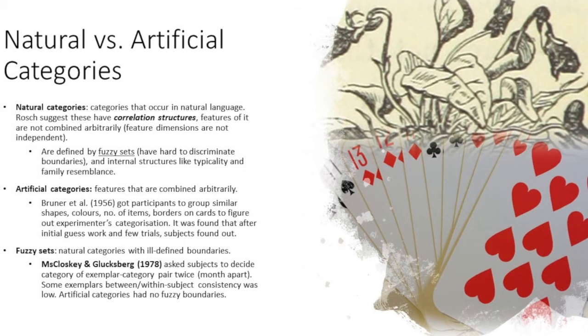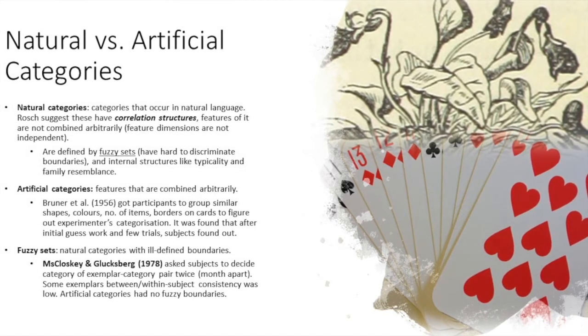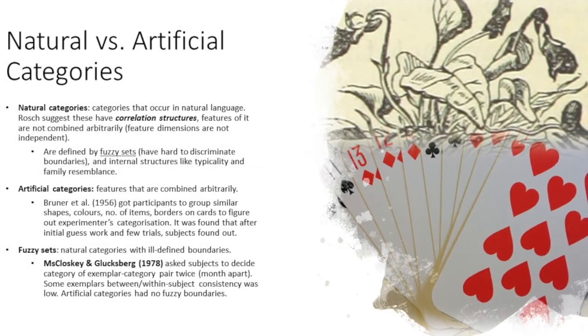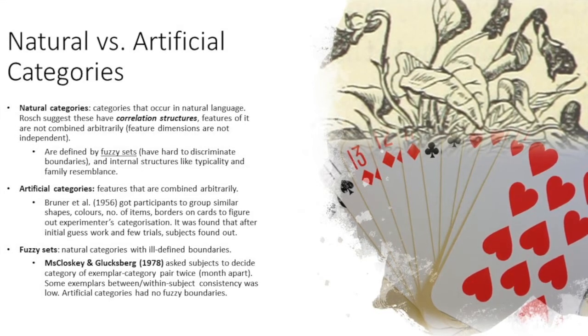They are defined by fuzzy sets. They have hard to discriminate boundaries and have internal structures which include typicality and family resemblance effects.